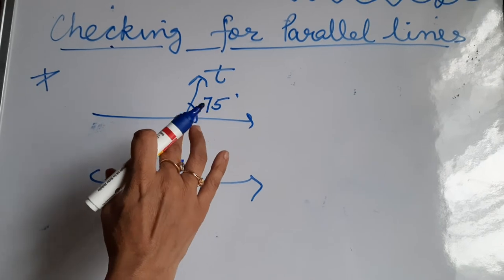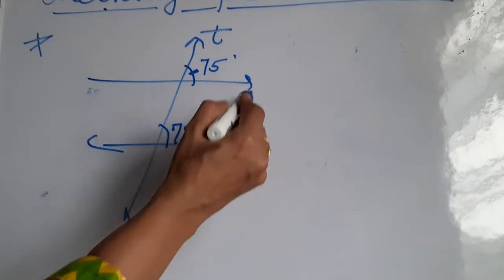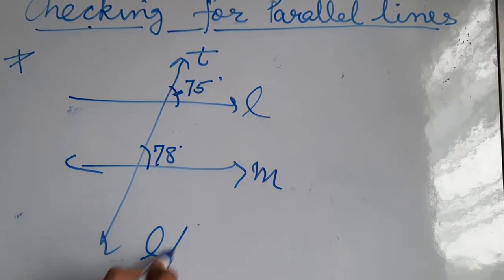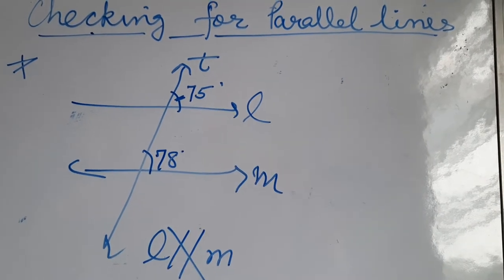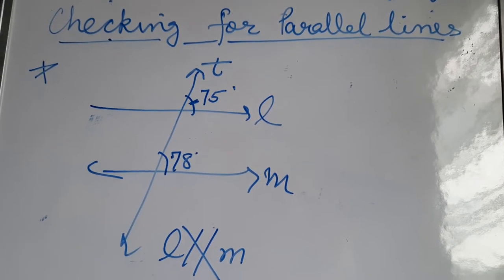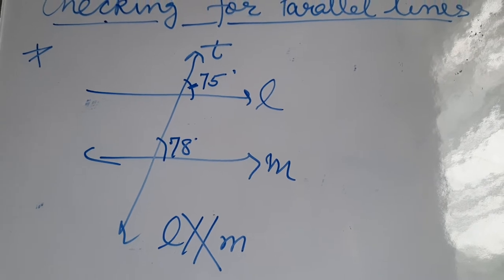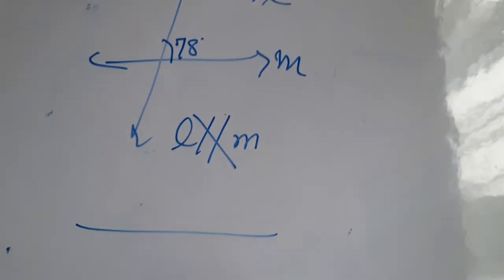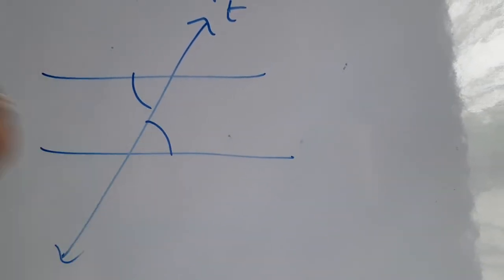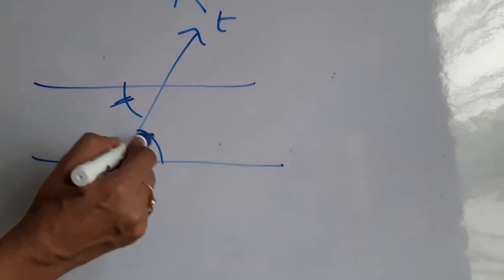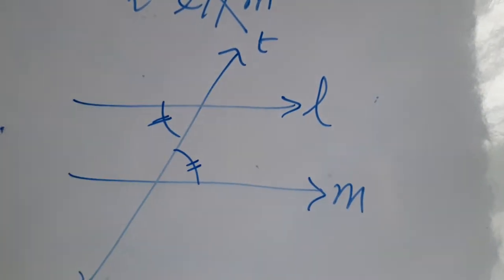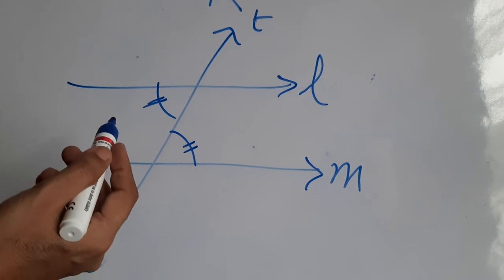It will be asked whether line L is parallel to line M or not. If corresponding angles are not equal, we say L is not parallel to M. The second condition to check: if the pair of alternate interior angles are equal — if this angle and this angle are equal — then the lines are parallel.